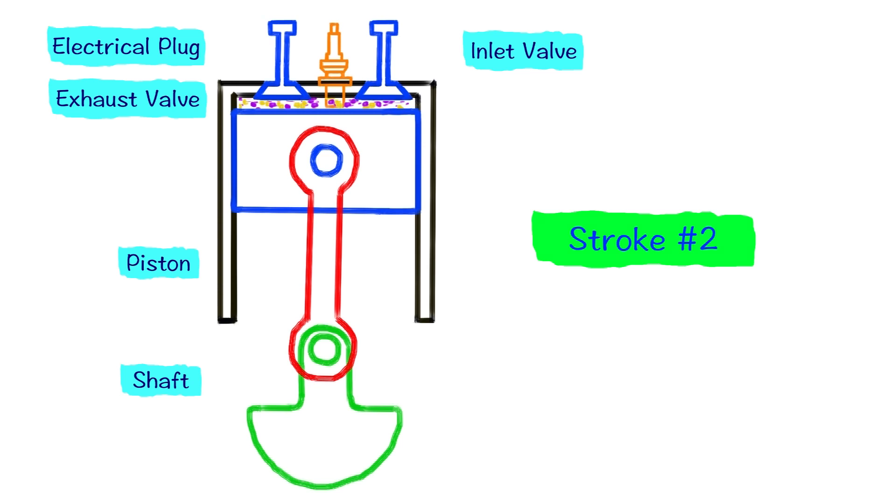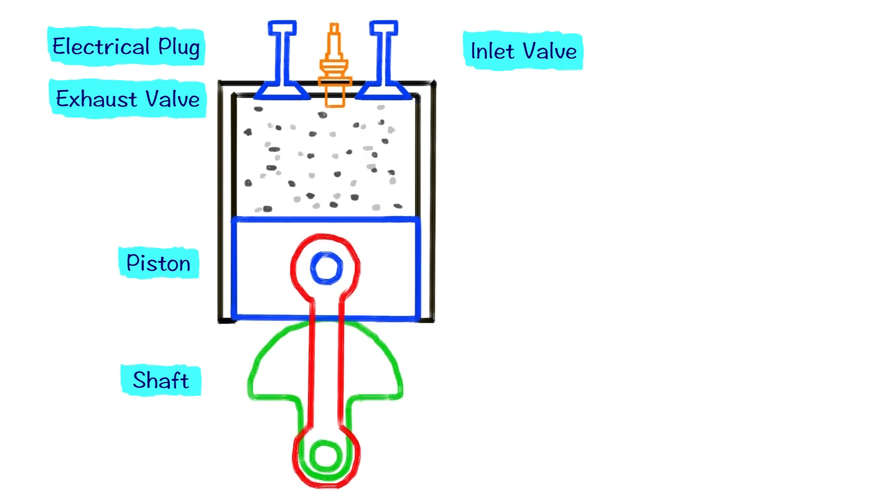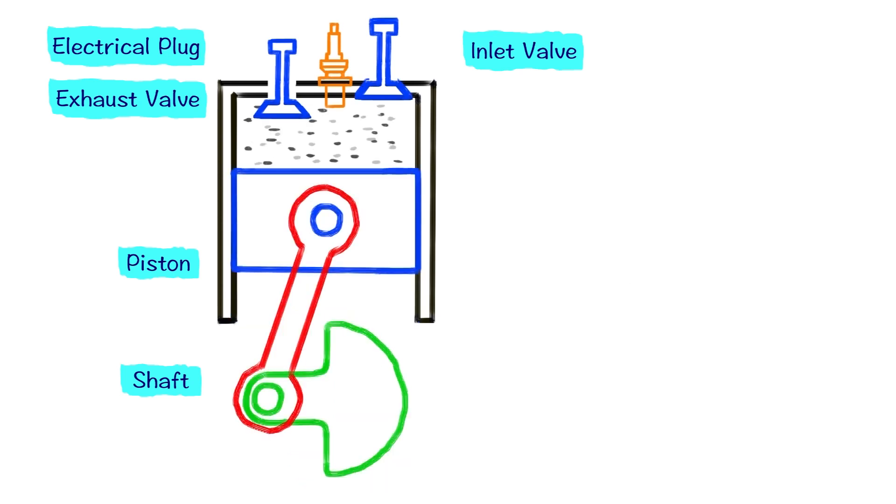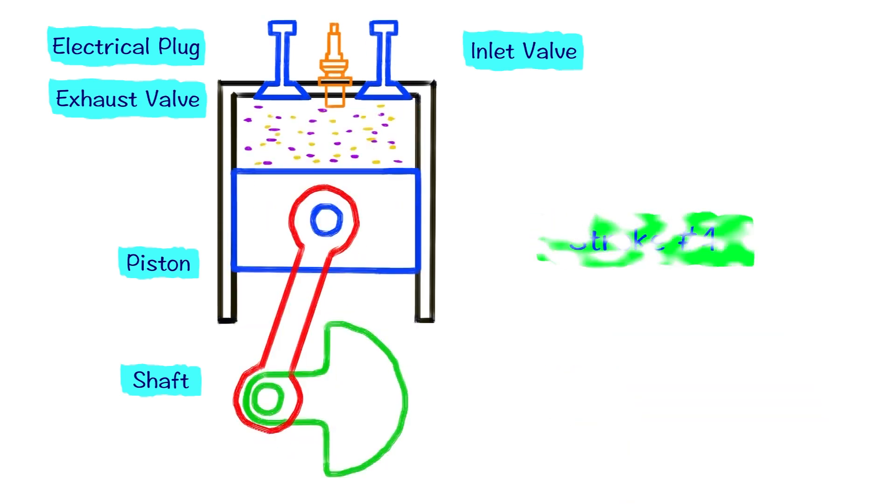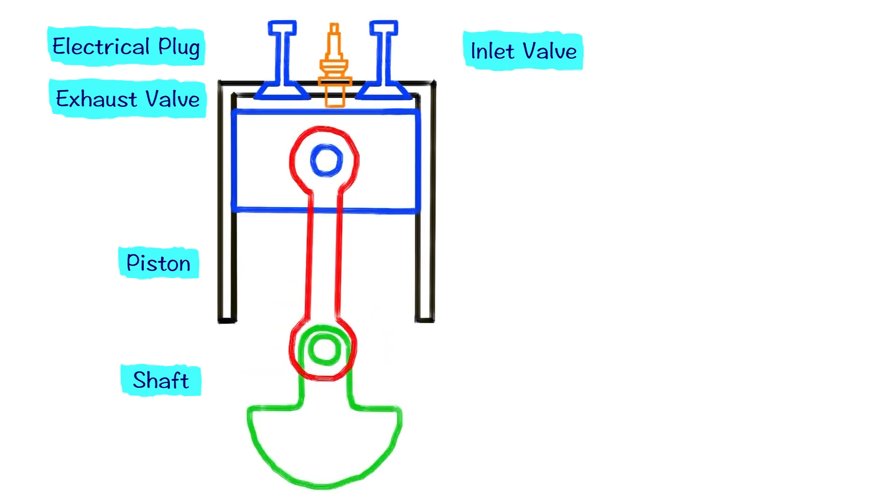Then the piston will go up, increasing the pressure and temperature of the mixture. Let's call this stroke two. Then we will have the spark and the piston will be pushed down. Let's call this stroke three. Under its own momentum the piston will go up again, the exhaust valve will be open and the resulting gases will be pushed out. Let's call this stroke four. Down, then up, down, then up. This is why this type of engine is called four-stroke internal combustion engine.